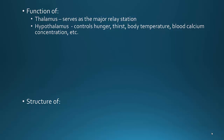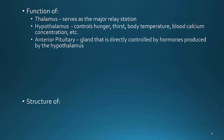Also, the hypothalamus — the hypothalamus has the area that controls hunger, thirst, body temperature, blood calcium concentration, and so on. It's going to be your area that has the basis of homeostasis. The anterior pituitary is the gland that is directly controlled by hormones produced by the hypothalamus. Remember, the anterior pituitary produces and releases lots of different hormones.